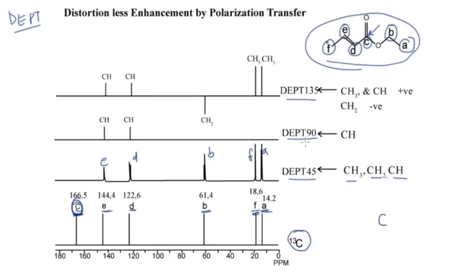DEPT 90 gives you information about how many CH units there are. Carbons d and e are both CH units in this compound, so you are getting peaks only at d and e positions. CH3, CH2, and quaternary carbon C are all suppressed in DEPT 90.